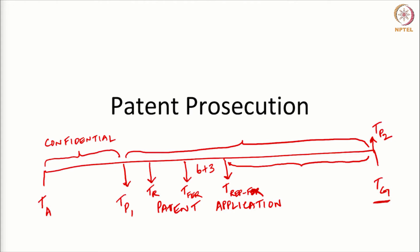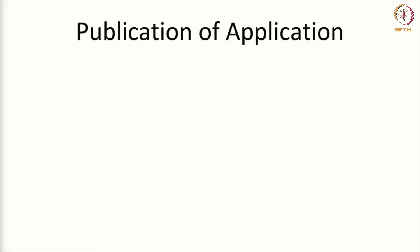Let us look at the stages the application goes through in the process. First, the patent application is published — but not normally for a period of 18 months from the date of filing. The application is not published during this time. This is because there is a period of dormancy where the application is kept confidential. The reason it is kept confidential is because of certain international arrangements where the applicant gets 18 months to decide which jurisdictions to enter.